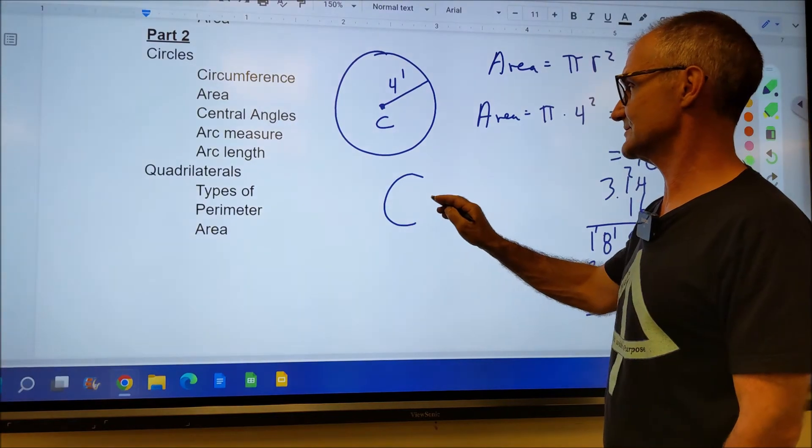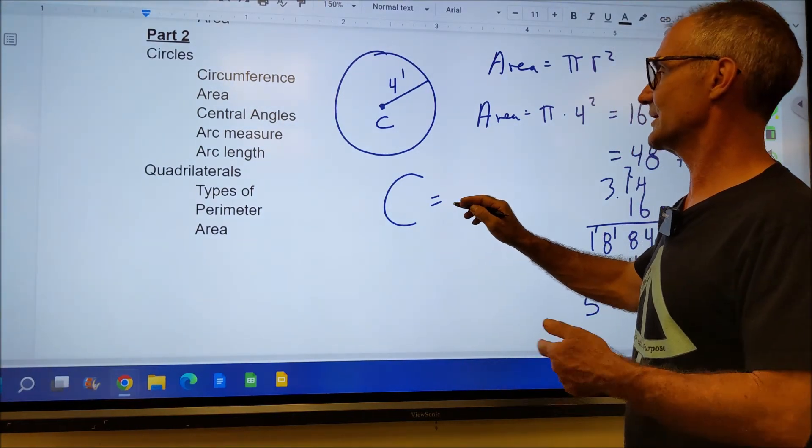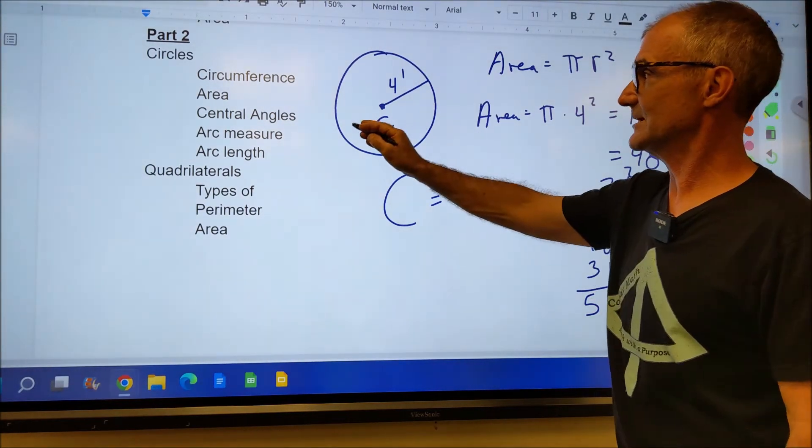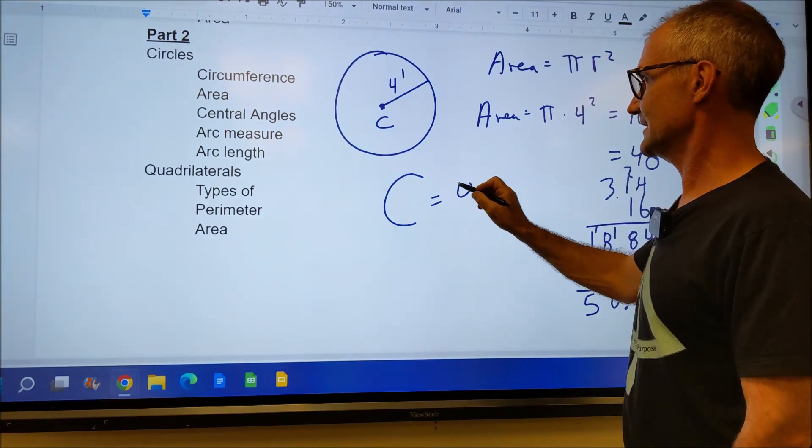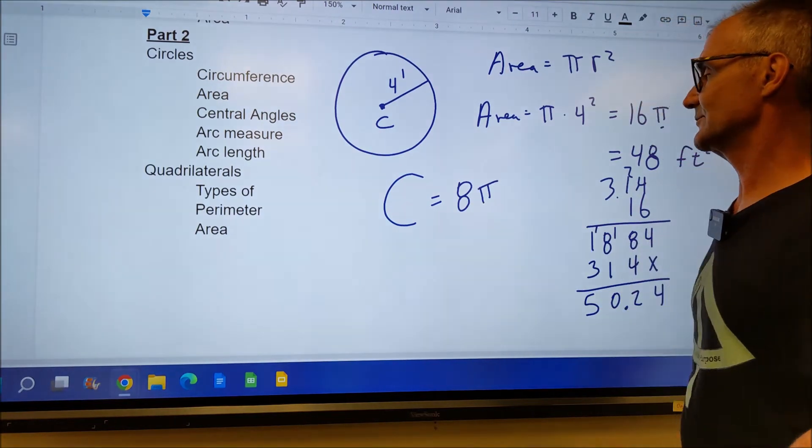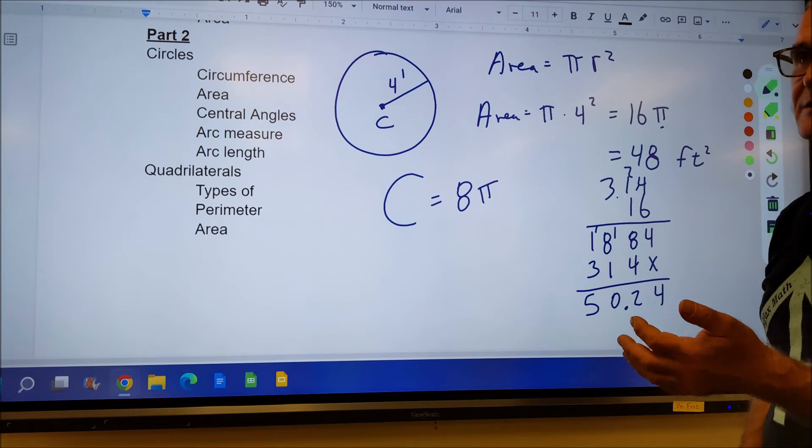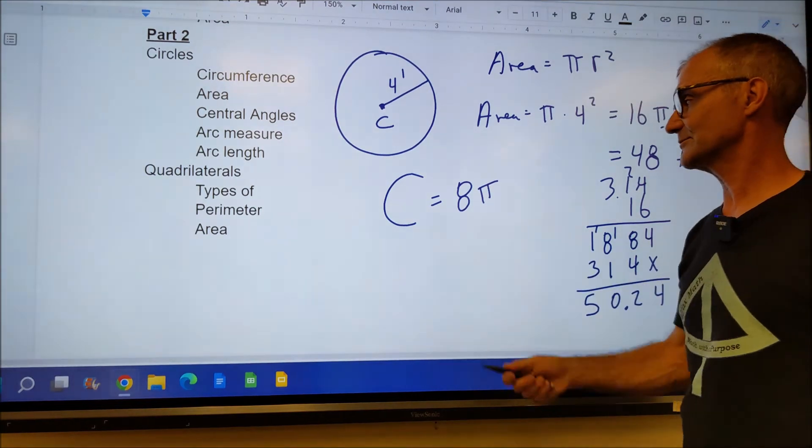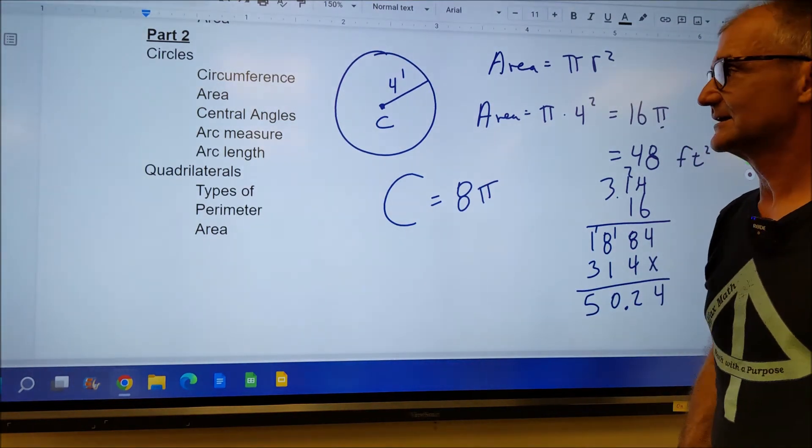The circumference of that circle is 2 pi r. So the radius times 2 is 8, 8 times pi. I can multiply that out to get 24 or times 3.14 to get a little bit more accurate.